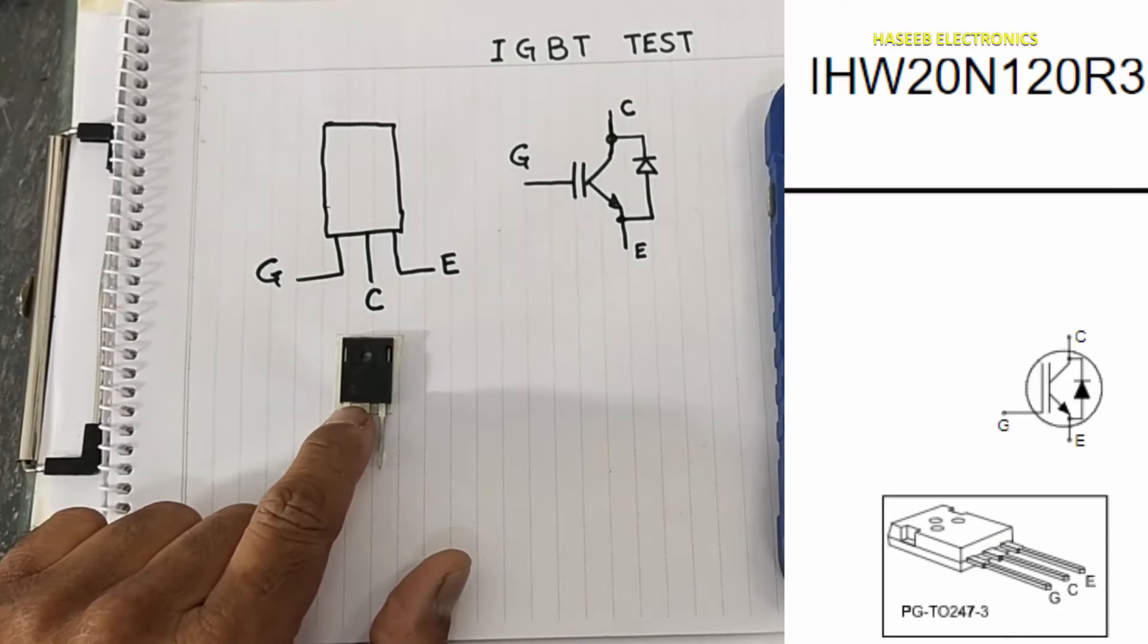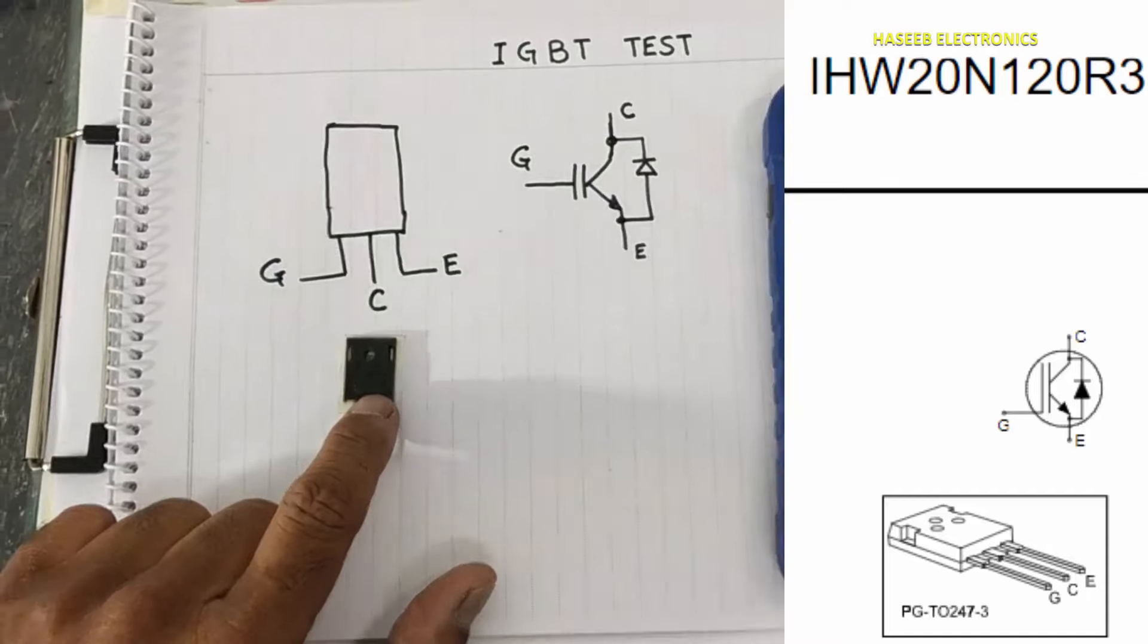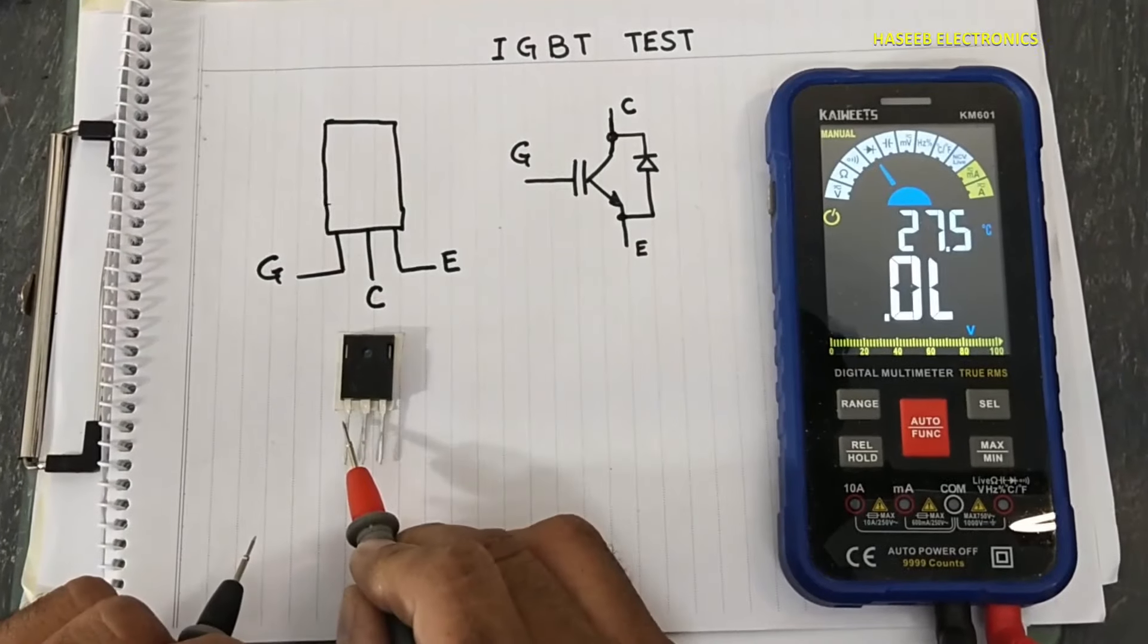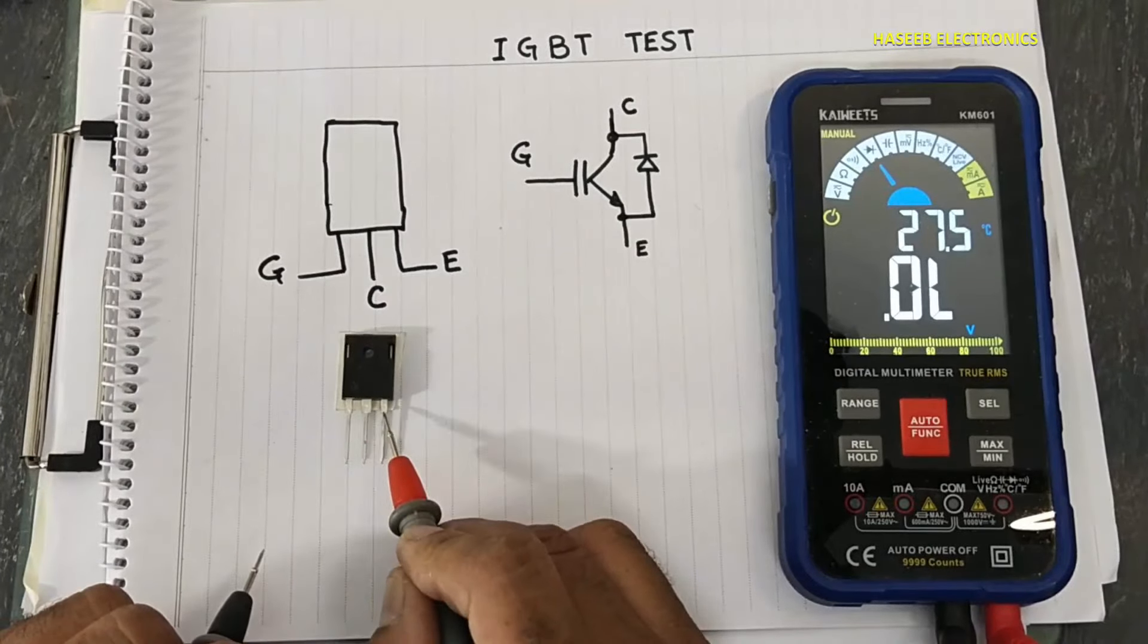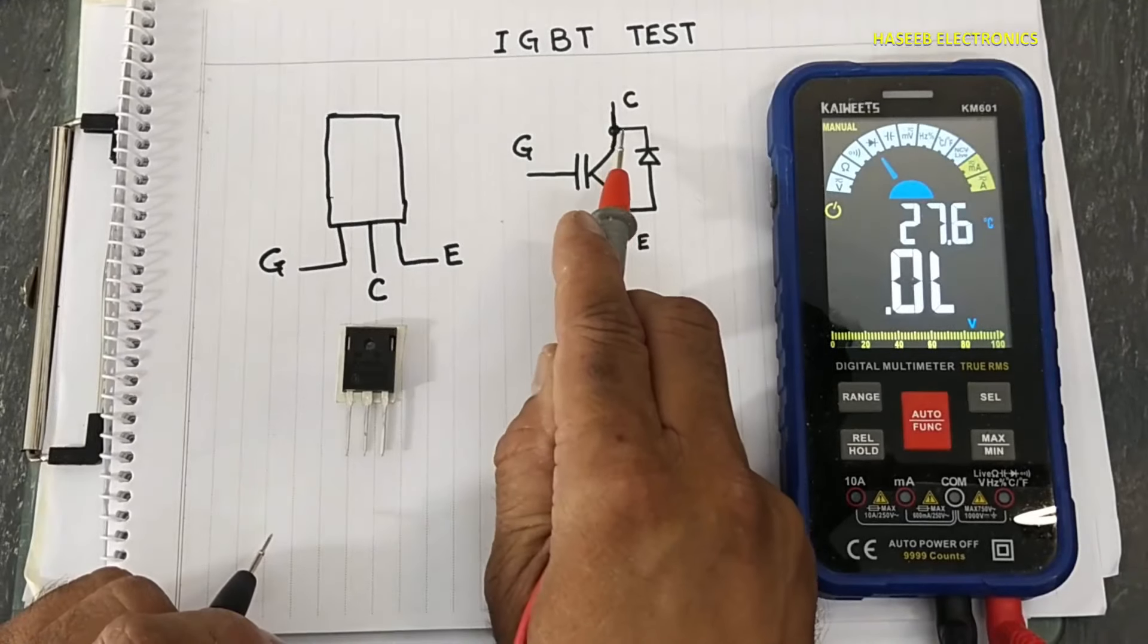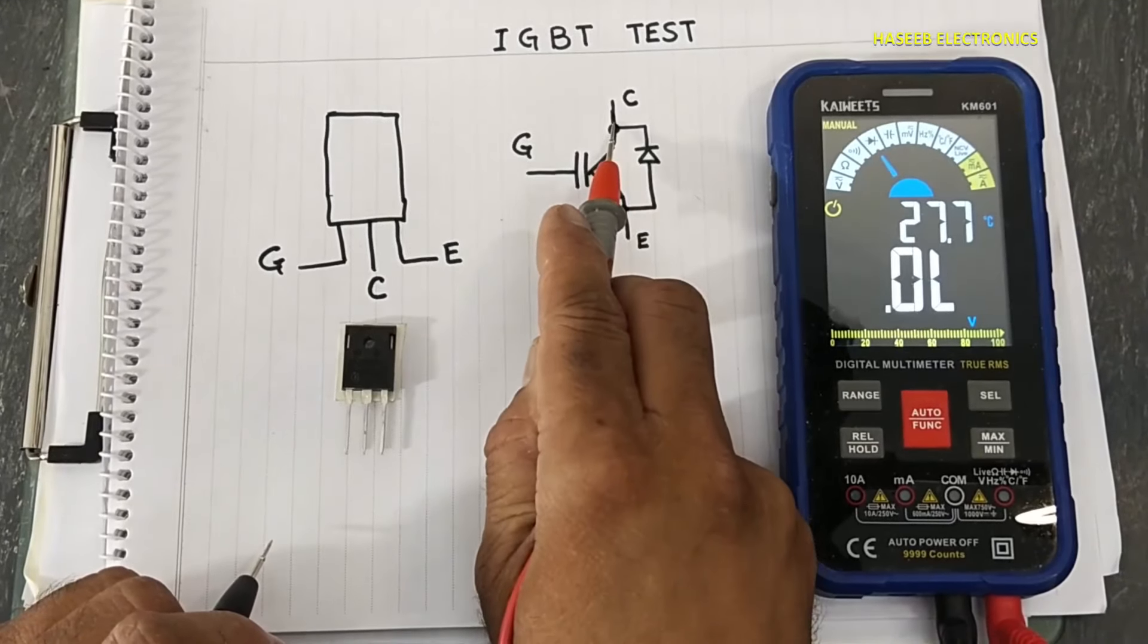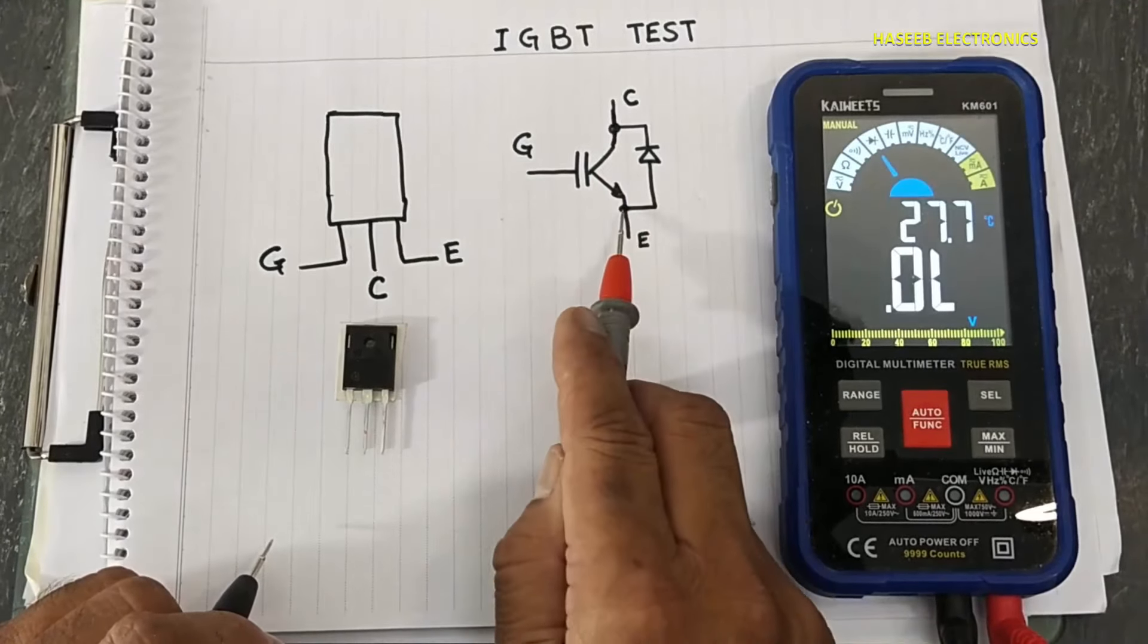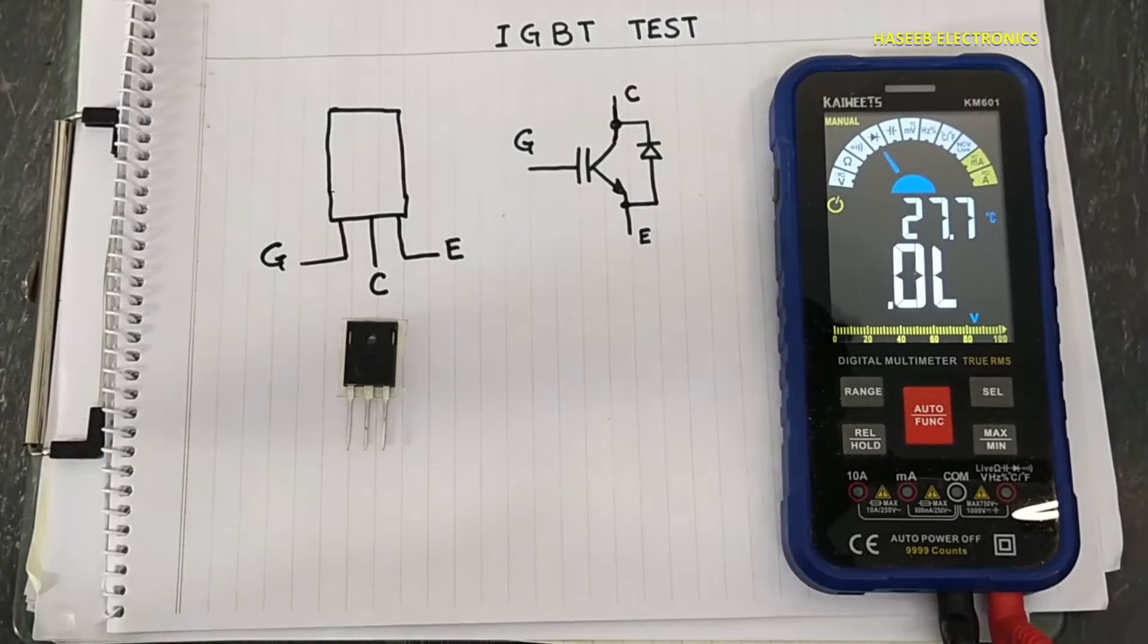I have this H20R1203 IGBT with gate, collector, and emitter. There is a body diode between collector to emitter. For testing purposes...